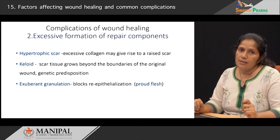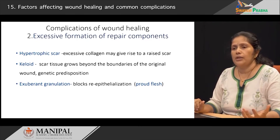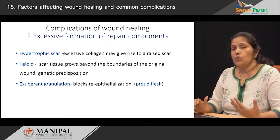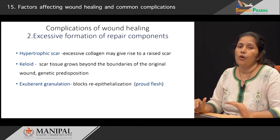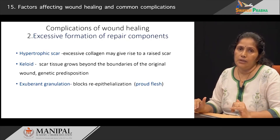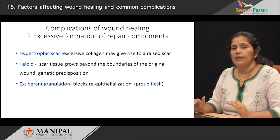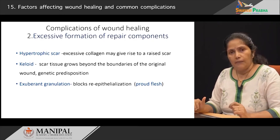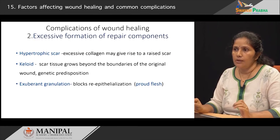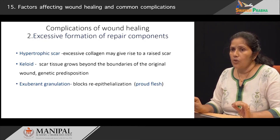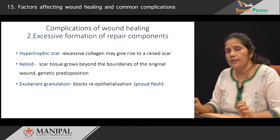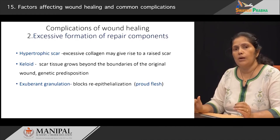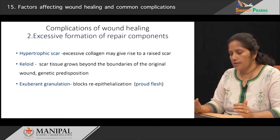The third type of aberration that we can see is an exuberant granulation tissue formation. This granulation tissue increases so much that it prevents the formation of the epithelial layer, and hence healing will be incomplete. It is given a very interesting name which is known as proud flesh. This proud flesh or exuberant granulation tissue must be prevented, and sometimes it may be cauterized or surgically removed so as to allow the epithelialization of these tissues.